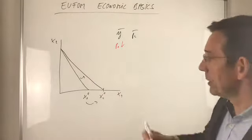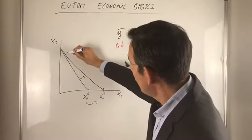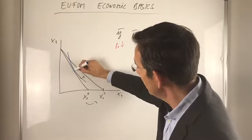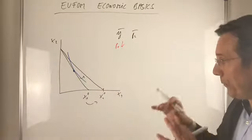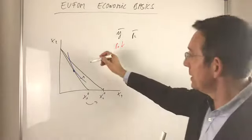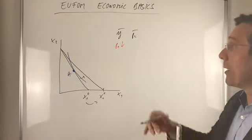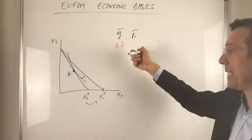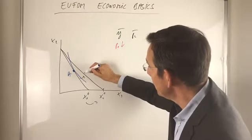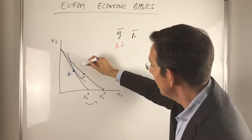And what about the optimal choice now for normal preferences? So our optimal choice for this budget, for these prices, is here. Let's say that's point A. However, now the price has changed. Budget is the same. And now the optimal choice would be here.